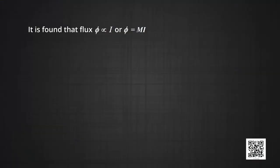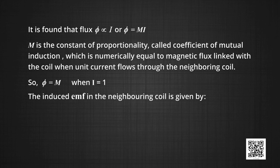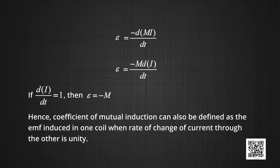Let us find out the coefficient of mutual induction. It is found that the flux phi is proportional to I, or phi is equal to M into I. M is the constant of proportionality called the coefficient of mutual induction, which is numerically equal to magnetic flux linked with the coil when unit current flows through the neighboring coil. The induced EMF in the neighboring coil is given by E equal to minus d phi by dt, which will be equal to minus M di by dt. If di by dt is equal to 1 then E is equal to minus M.